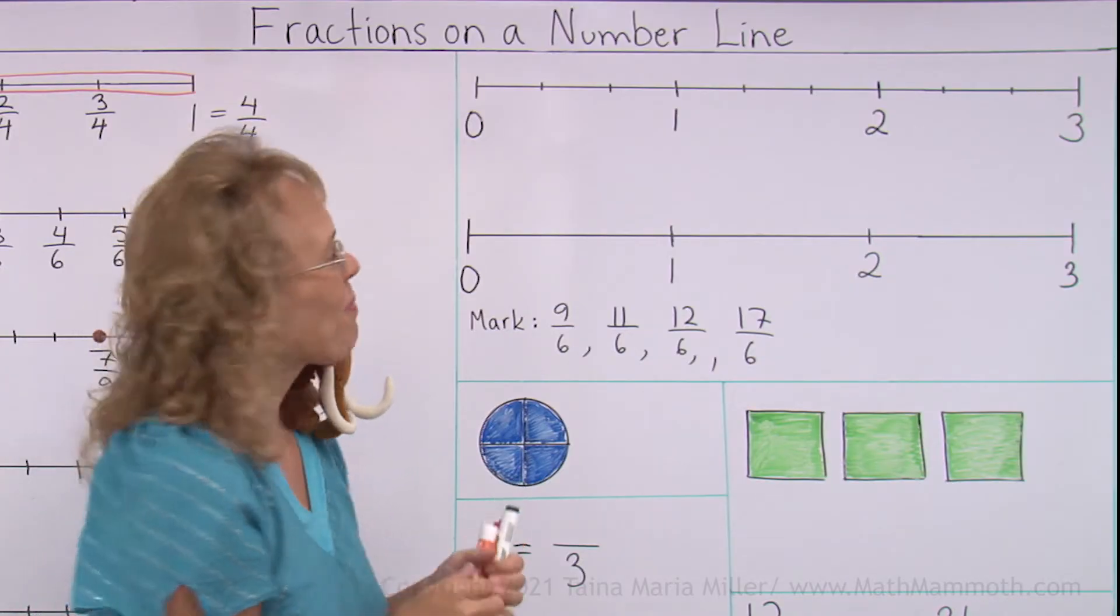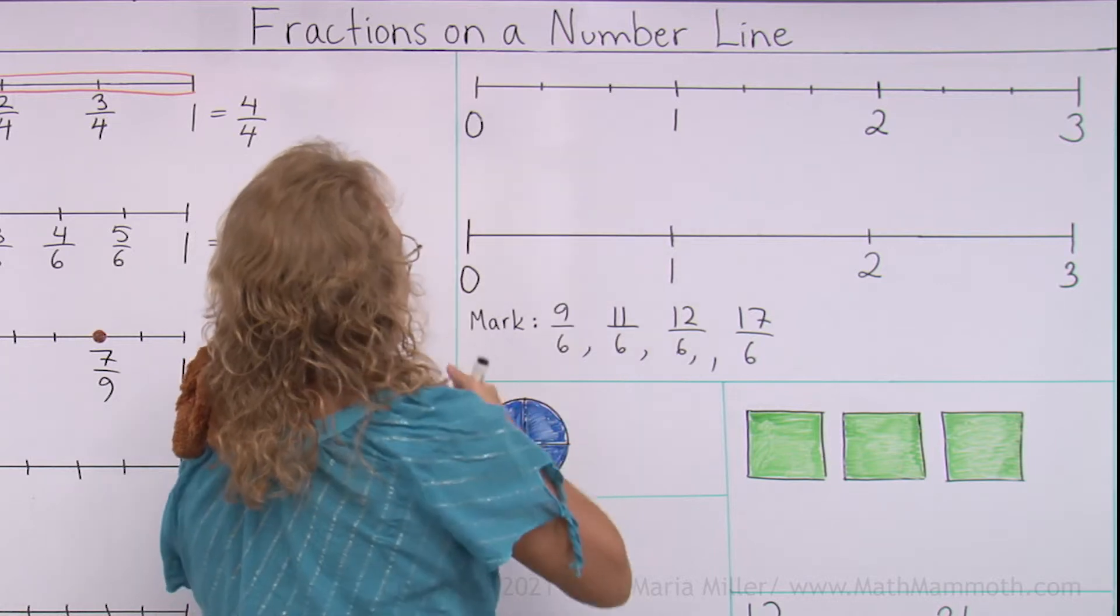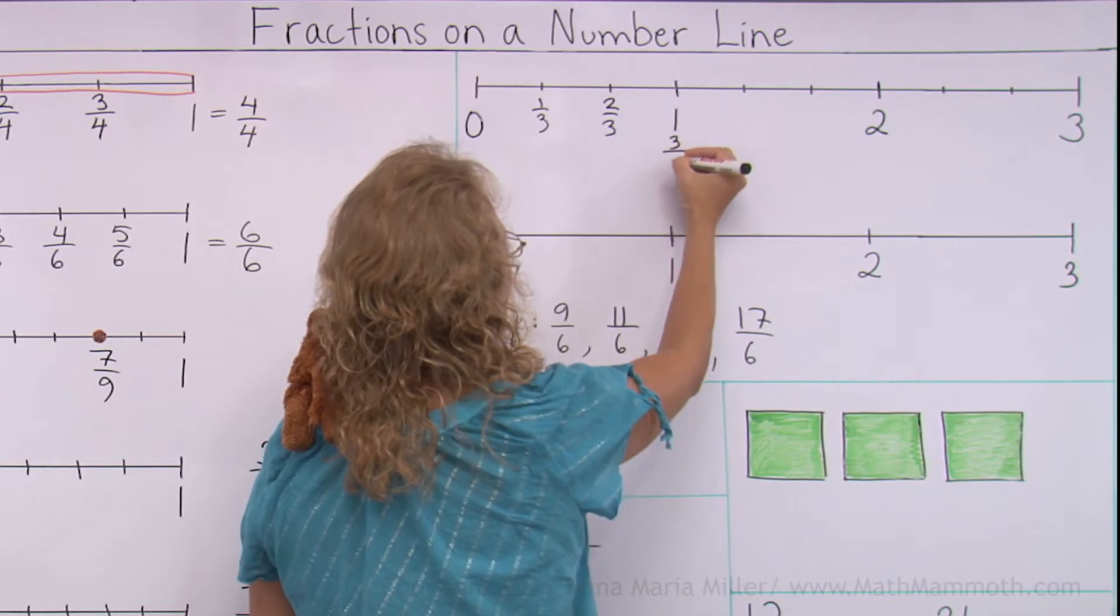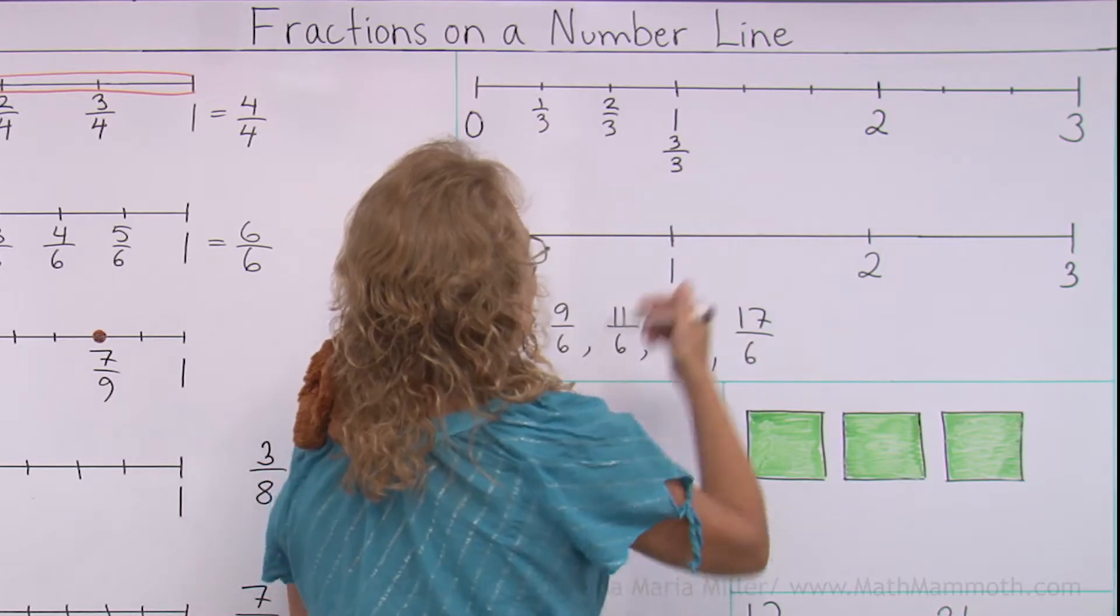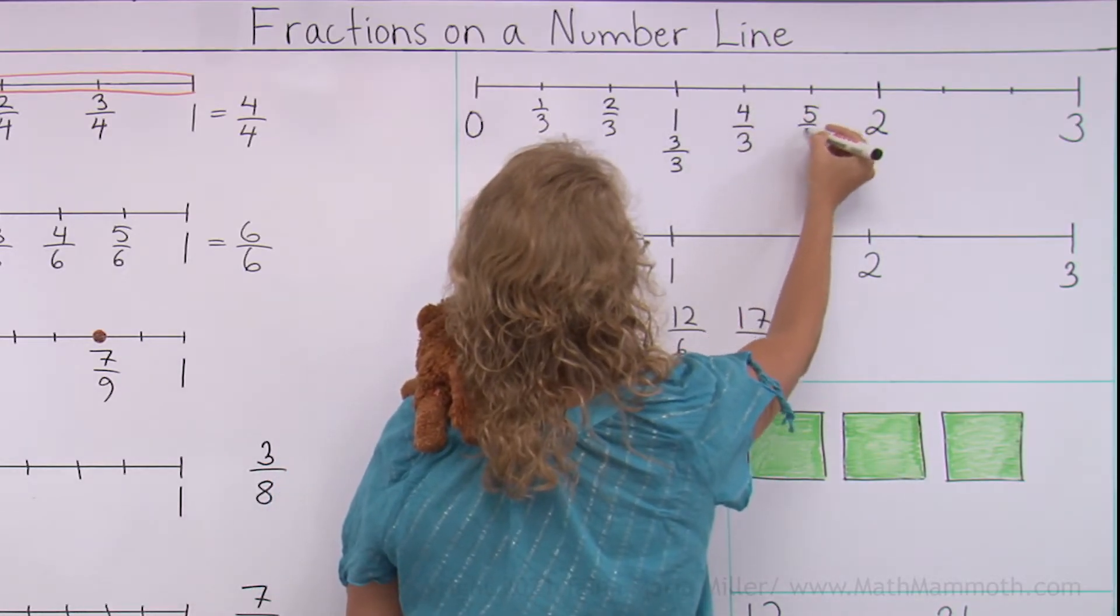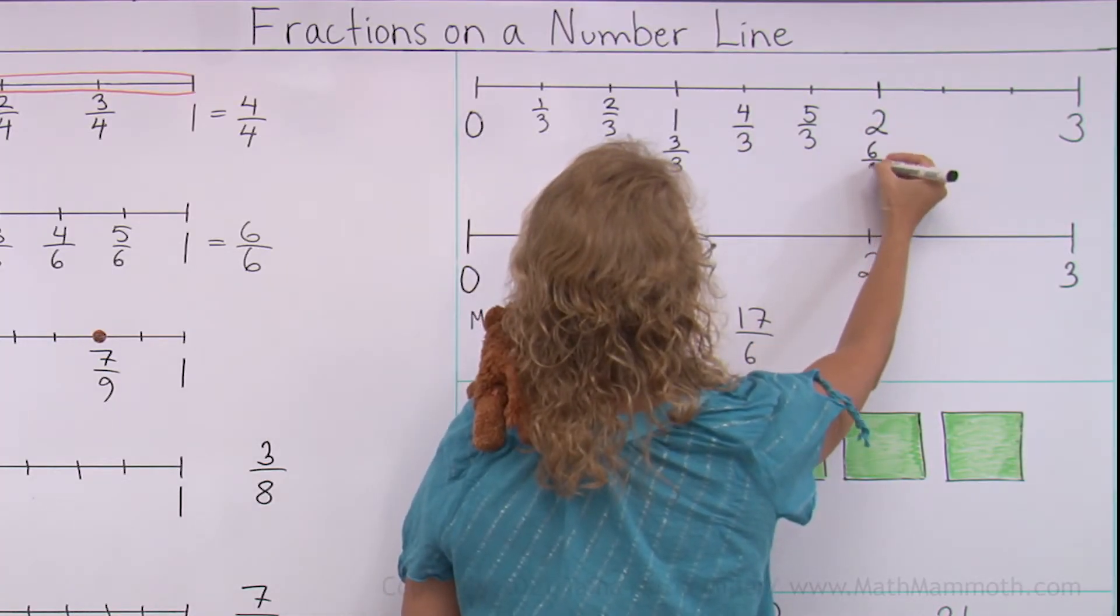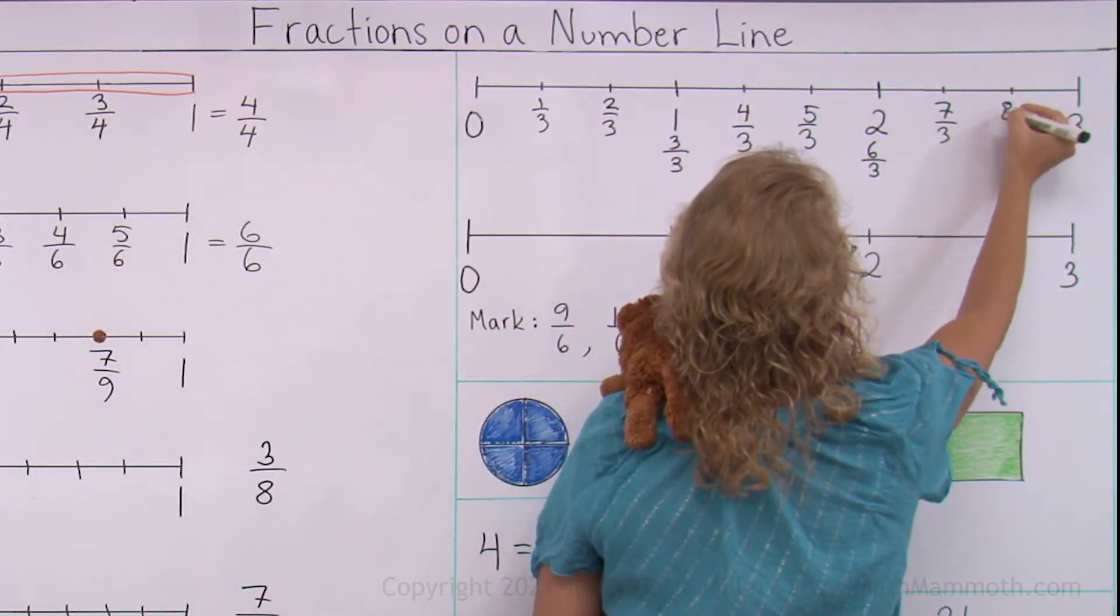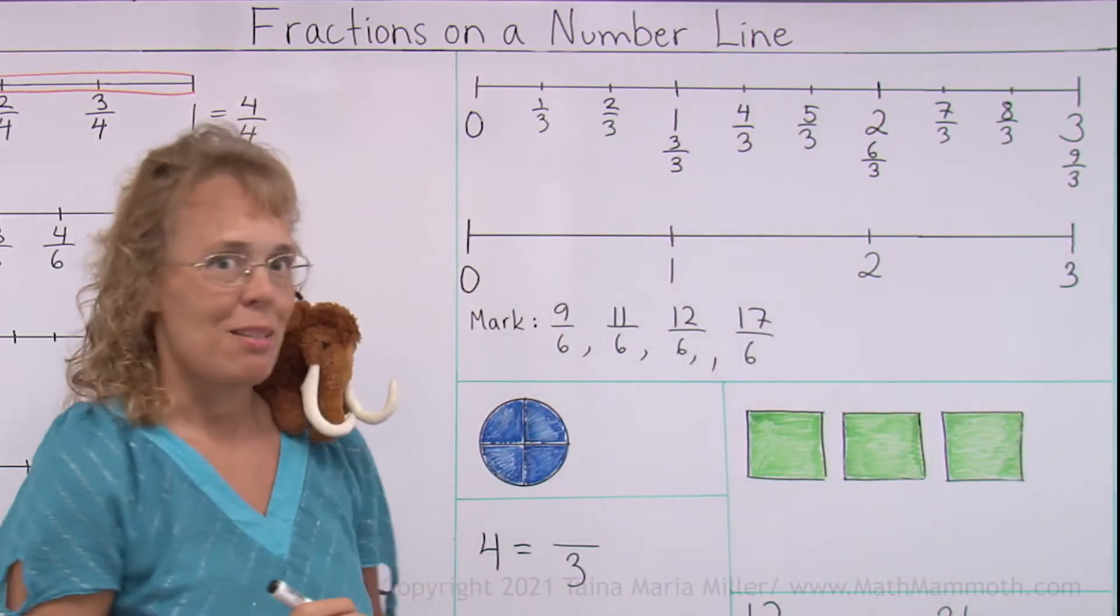So we have thirds, and like we studied, this would be 1 third, 2 thirds. This here is 3 thirds, but it is also 1. This one here is a third more, so it is 4 thirds, and here is 5 thirds. Then we come to 6 thirds, which is the same as 2, and then to 7 thirds, 8 thirds, and here would be 9 thirds. 9 thirds being the same as 3.